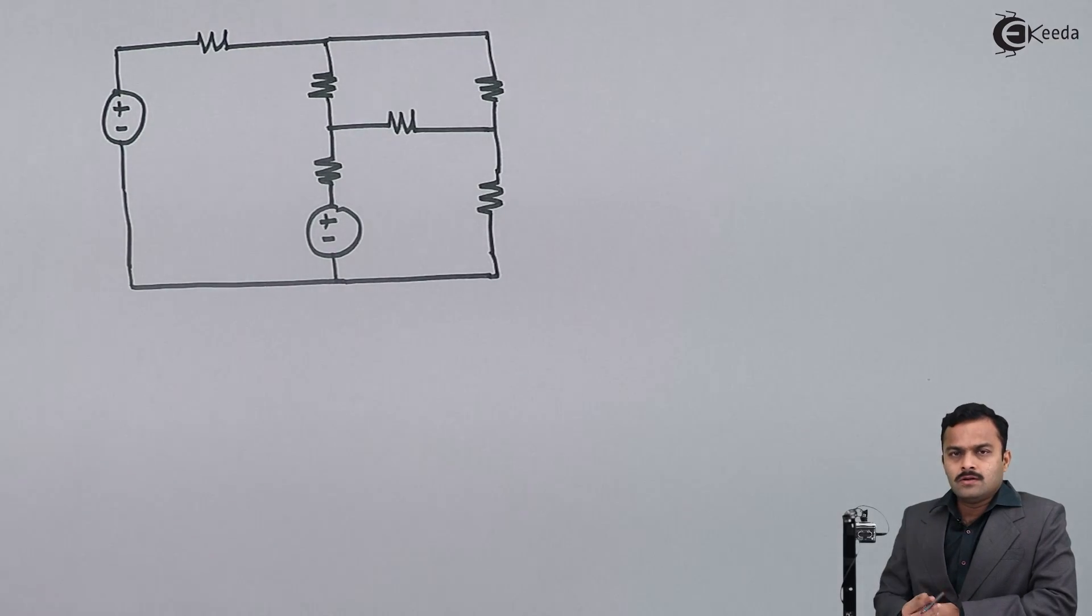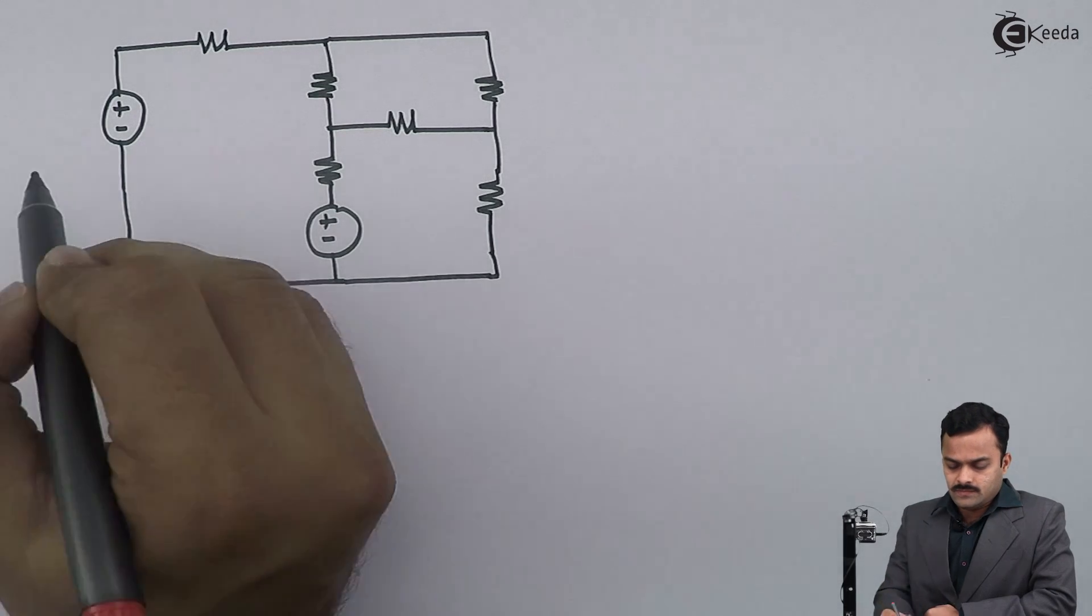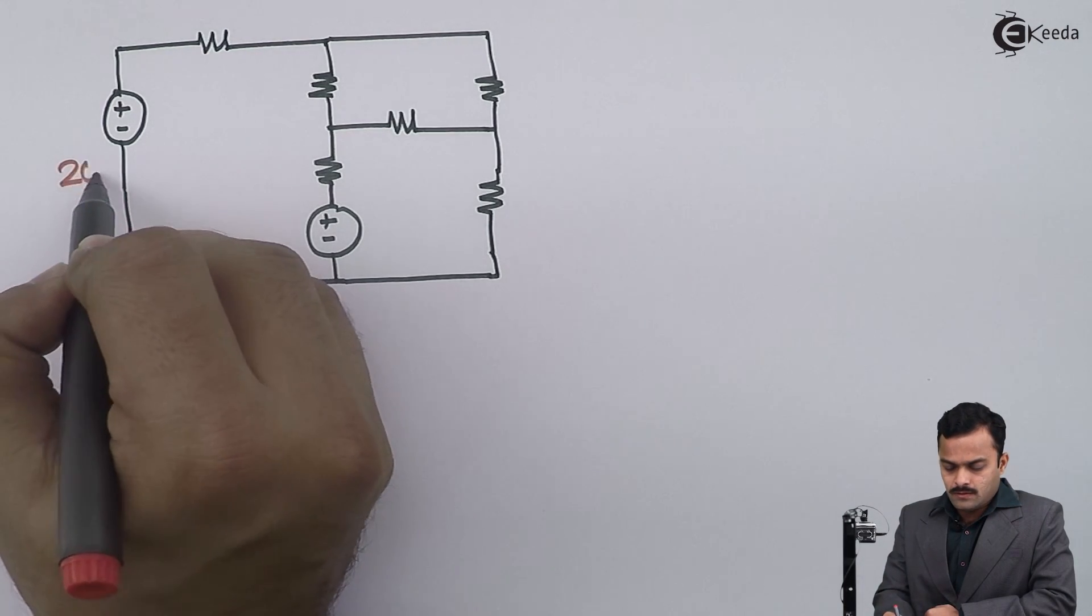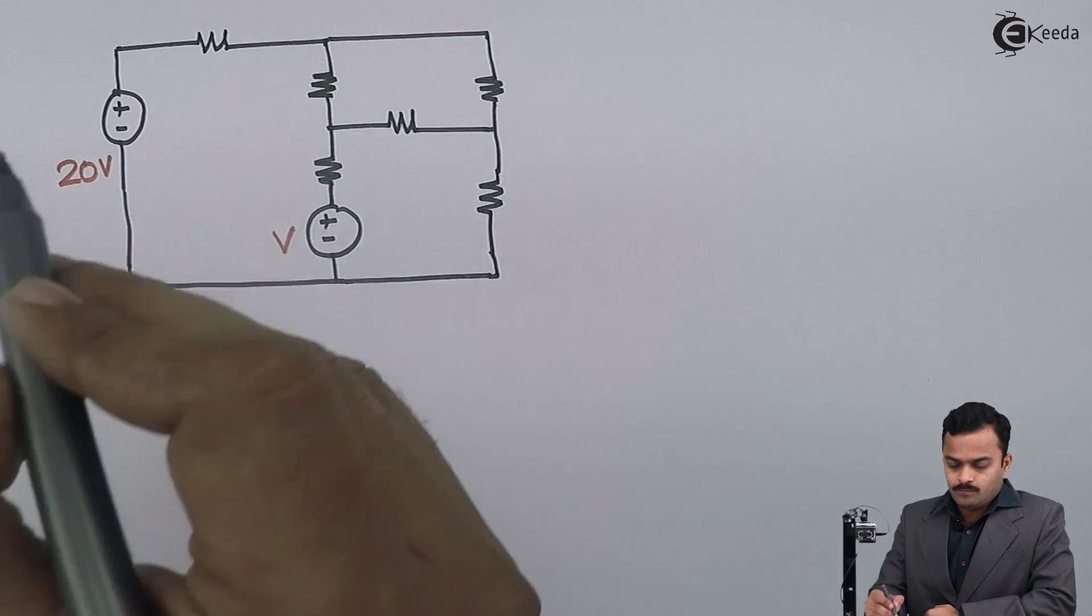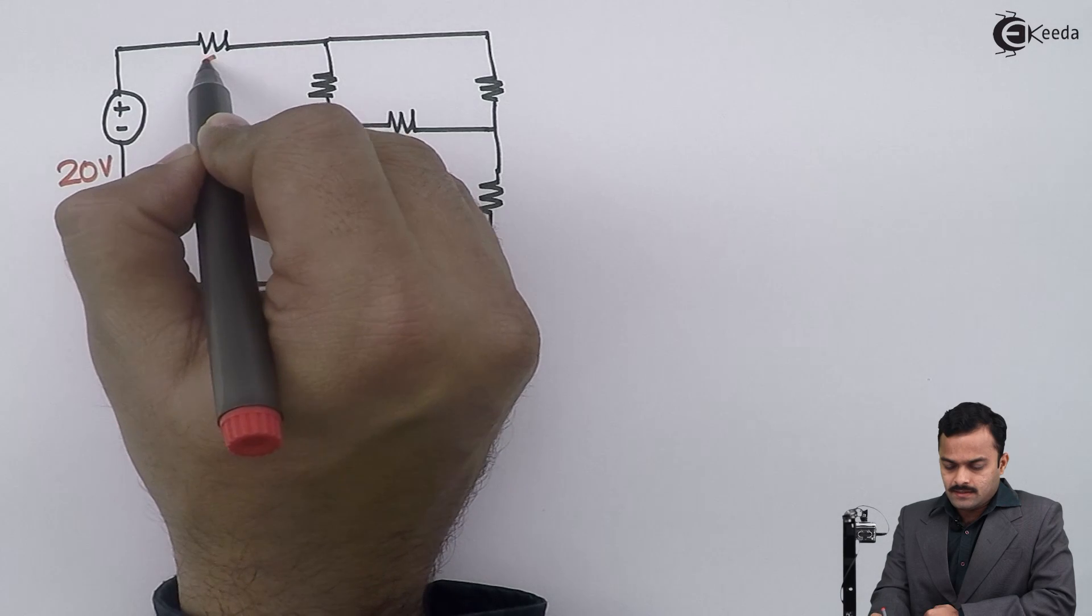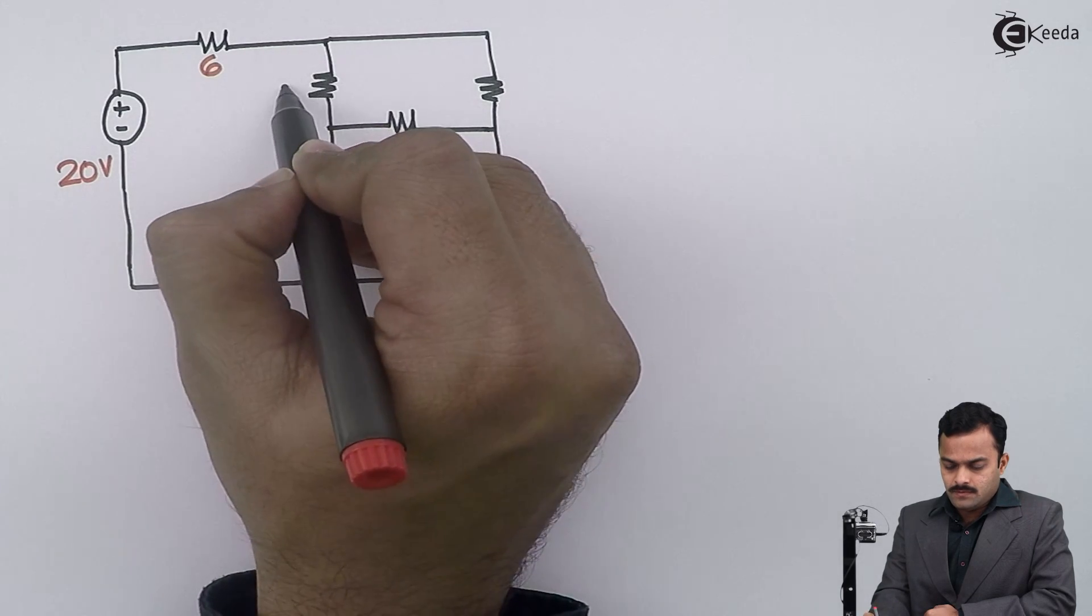So here two batteries are given of voltage 20V and this is unknown battery V. Resistances are 6 ohm, 2 ohm, 3, 1, 4 and 5.